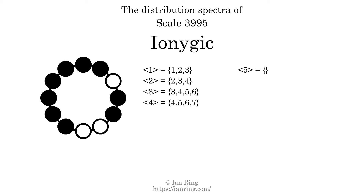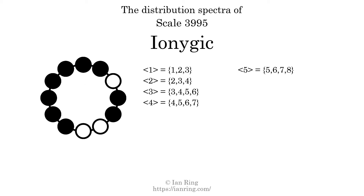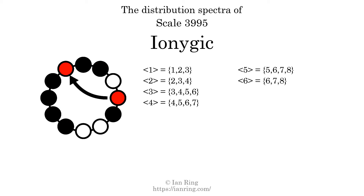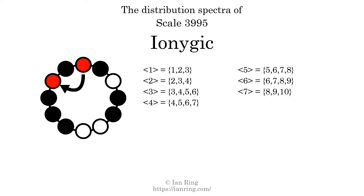The generic interval of 5 scale steps comes in 4 different specific interval sizes: 5 semitones, 6 semitones, 7 semitones, and 8 semitones. The spectrum width of this generic interval is 3. The generic interval of 6 scale steps comes in 4 different specific interval sizes: 6 semitones, 7 semitones, 8 semitones, and 9 semitones. The spectrum width of this generic interval is 3. The generic interval of 7 scale steps comes in 3 different specific interval sizes: 8 semitones, 9 semitones, and 10 semitones. The spectrum width of this generic interval is 2.